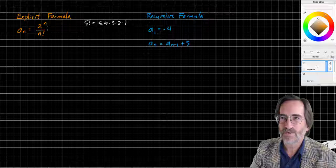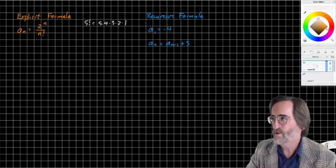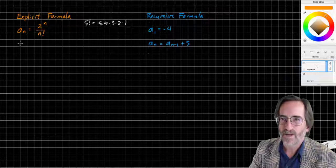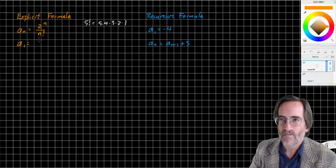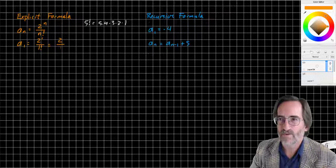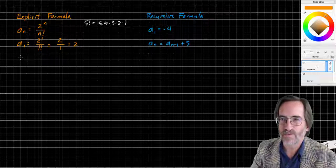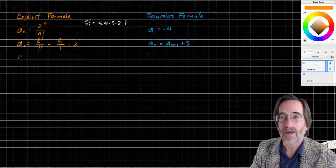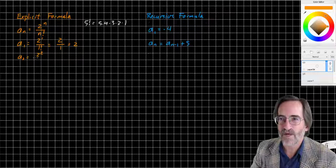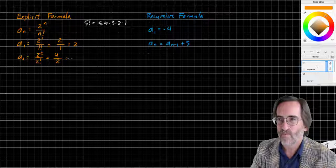A sub n equals 2 to the n over n factorial. I can use this formula to generate the sequence. So I can generate A sub 1 is 2 to the 1 over 1 factorial, which is 2 to the 1 is 2, 1 factorial is 1, 2 divided by 1 is 2. So the first term is 2. A sub 2, the second term, 2 to the 2nd over 2 factorial. 2 to the 2nd is 4. 2 factorial is 2 times 1, which is 2. 4 divided by 2 is 2.